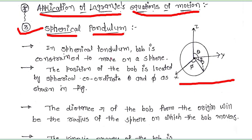In the spherical pendulum, the bob is constrained to move on a sphere. The position of the bob is located by spherical coordinates theta and phi, as shown in the figure.